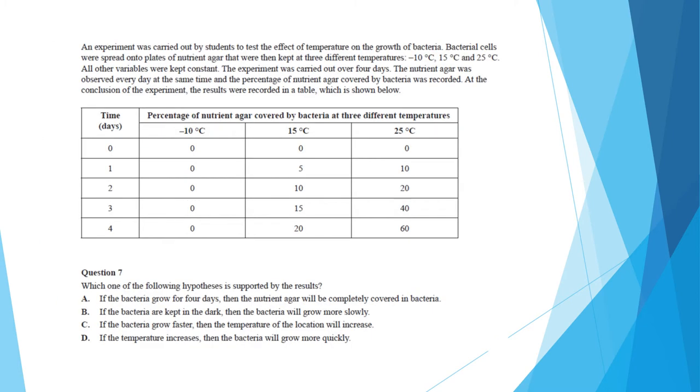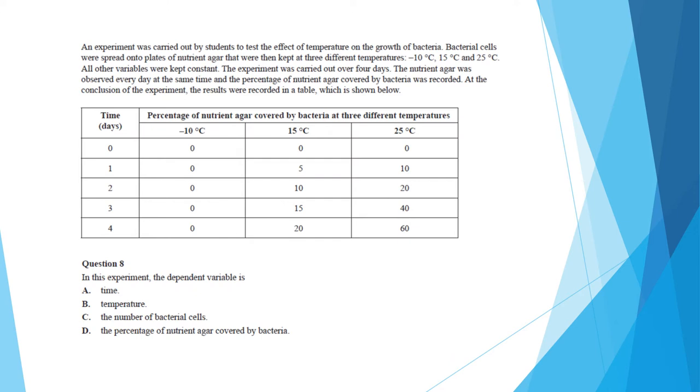Questions seven to nine all require you to pre-read this information. Question seven asks which hypothesis is supported by the results? And the answer is obviously D because that is the only variable that was being tested in this question. This was actually the best answered question out of this entire paper. Question eight asks you what is the dependent variable? The answer here is percentage of nutrient agar covered by bacteria. Slightly less well answered than the previous question, but overall the majority did well. Remember the scientific method needs controlled variables, which are factors that are consistent between the different arms of the experiment. The independent variable, which is the one that is being changed, which in this case is the temperature.